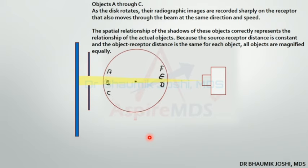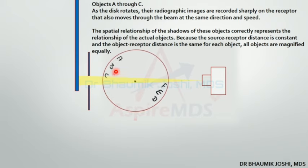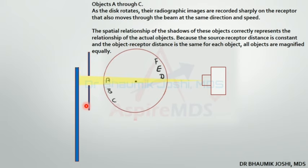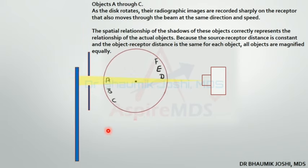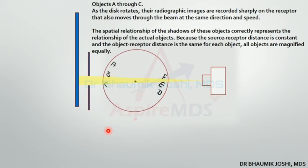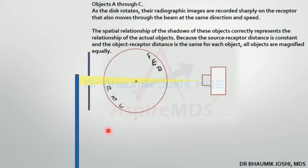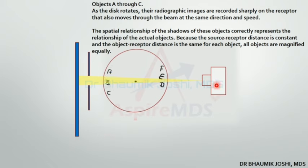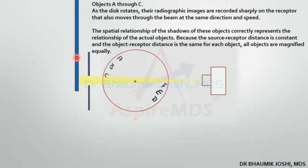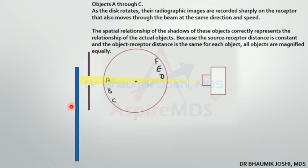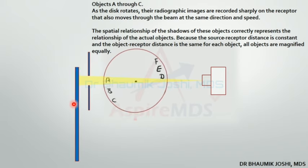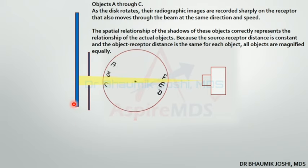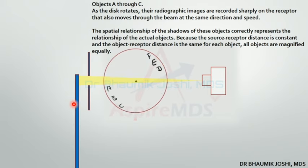Because the source-to-receptor distance is constant throughout the rotation and the object-to-receptor distance is also constant throughout the rotation, all objects are magnified equally. The average magnification on a panoramic image is approximately 12 percent.